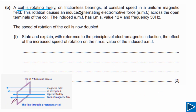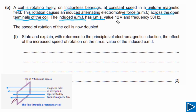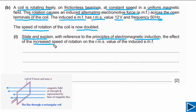For Part B, a coil is rotating freely on frictionless bearings at constant speed in a uniform magnetic field. This rotation causes an induced alternating EMF across the open terminals of the coil — since it is not a complete loop, only EMF is induced but no current flows. The induced EMF has an RMS value of 12 volts and frequency of rotation is 50 hertz. The speed of rotation is now doubled, and we must state and explain the effect on the RMS value of the induced EMF.